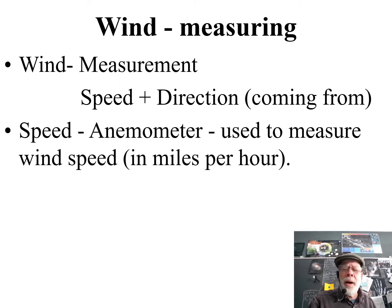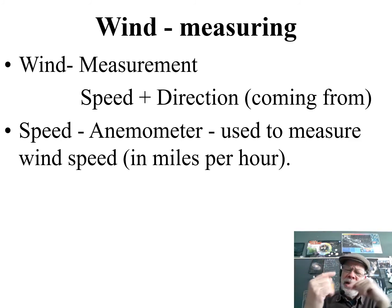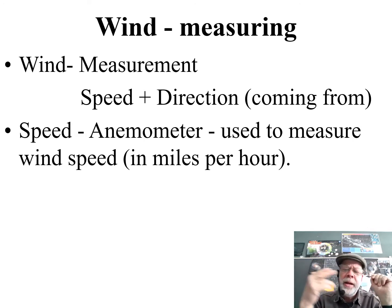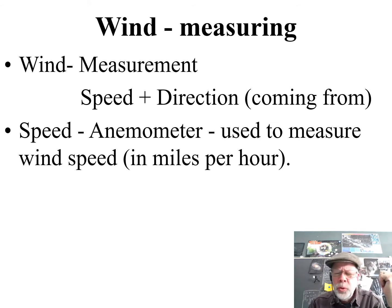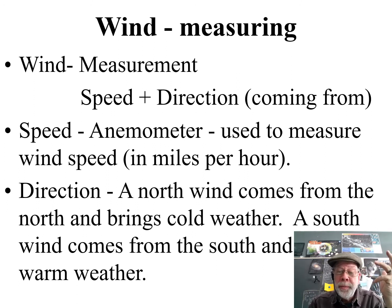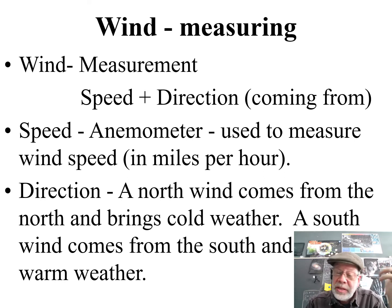We use something called an anemometer to measure the wind speed in miles per hour. It's a device with little cups on it — you see it spinning around — that measures how fast the wind is going. And you see an arrow pointer with a tail on it that aligns itself to which way the wind is blowing. So both the speed and the direction are important. A north wind is going to bring you cooler weather; a south wind is going to bring you warmer weather.